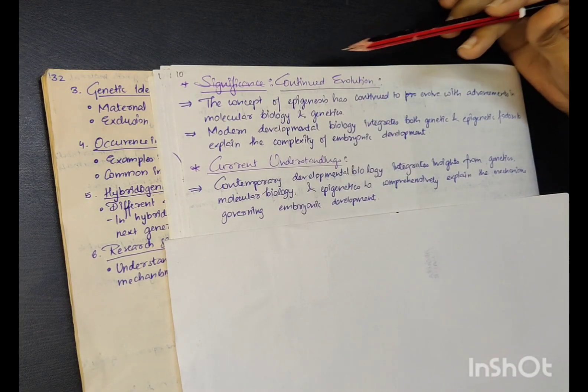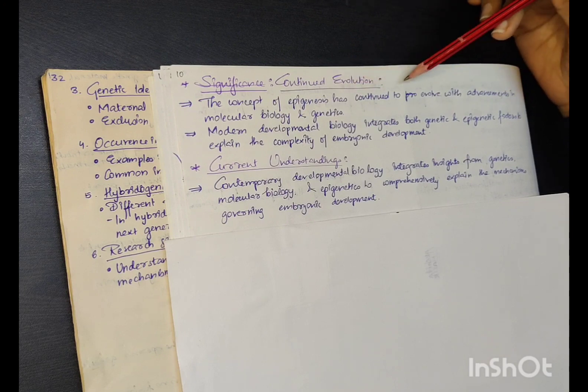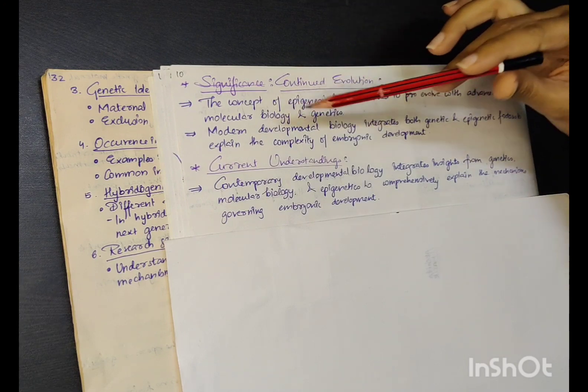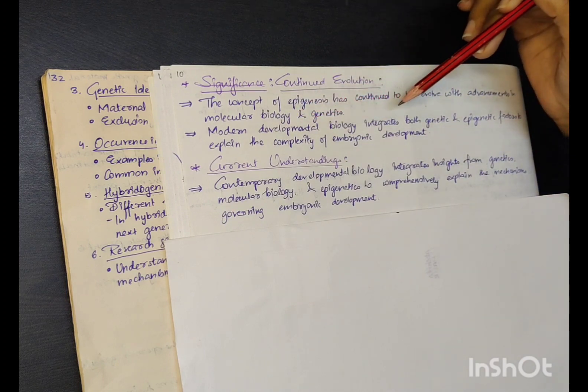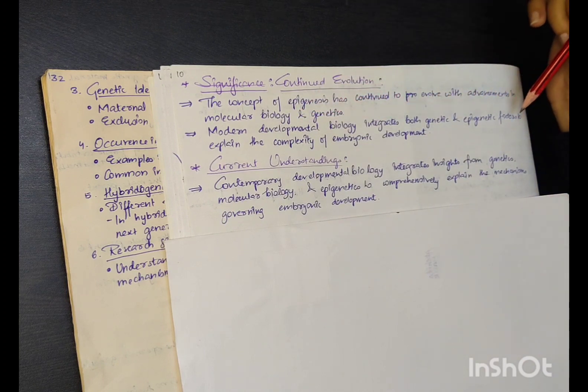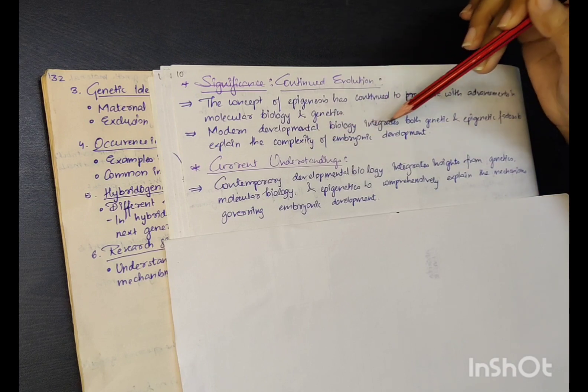Continued evolution: The concept of epigenesis has continued to evolve with advancement in molecular biology and genetics. Modern developmental biology integrates both genetic and epigenetic factors to explain the complexity of embryonic development.